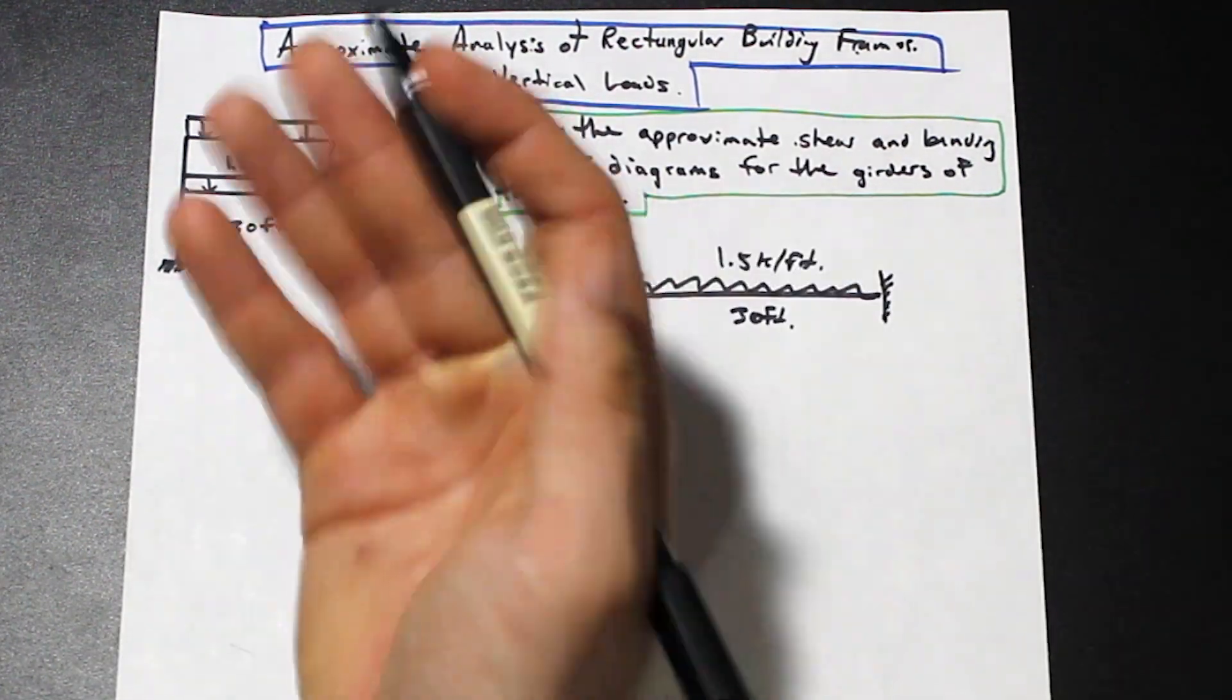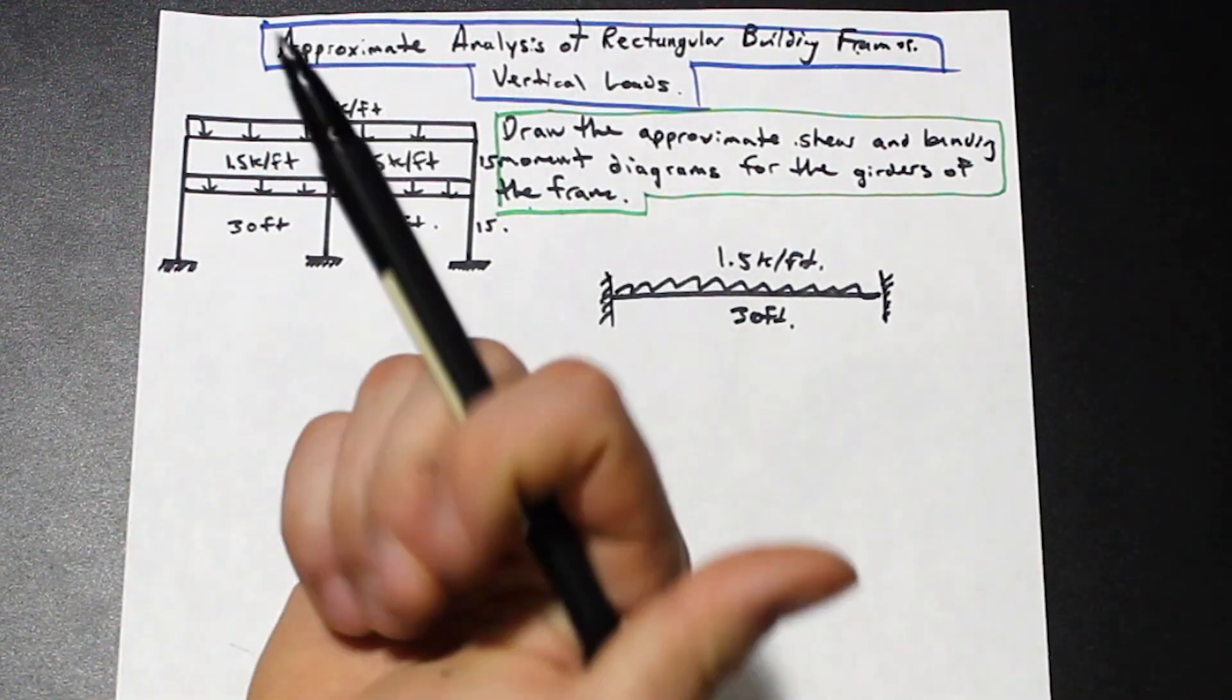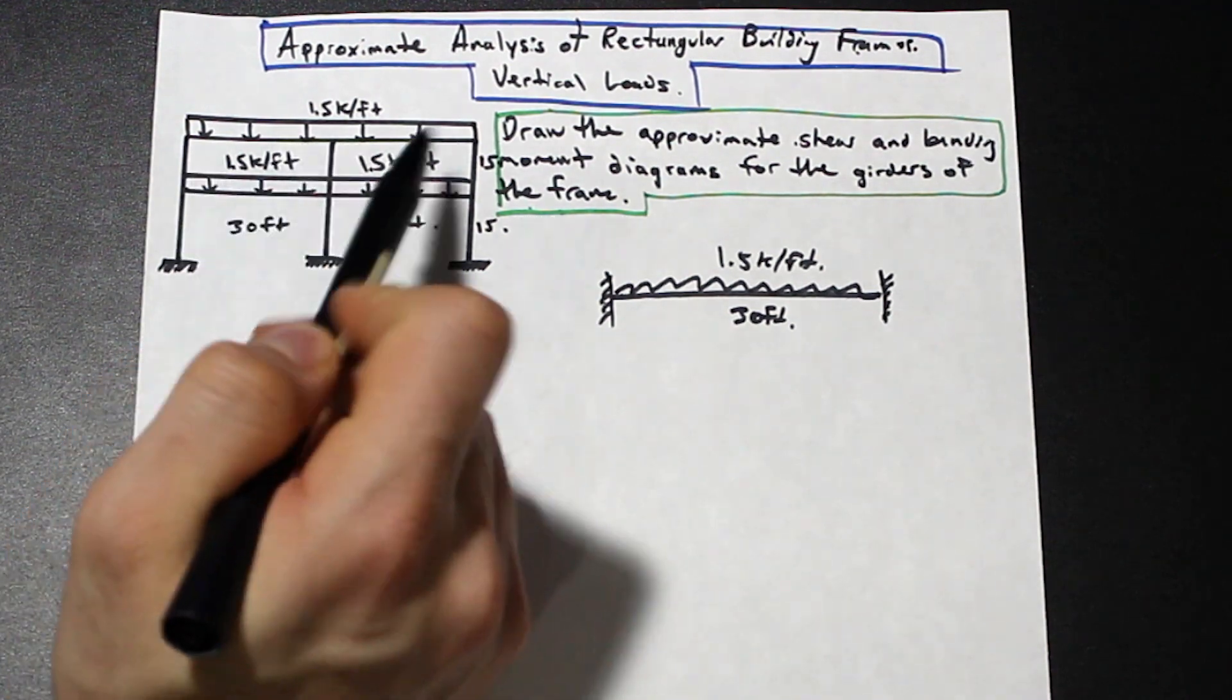So what this method involves is we need to make a few assumptions. Well, one, if there's any lateral loads, we can't do it. So we need to assume that the axial forces are zero.